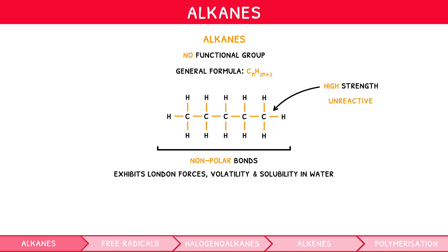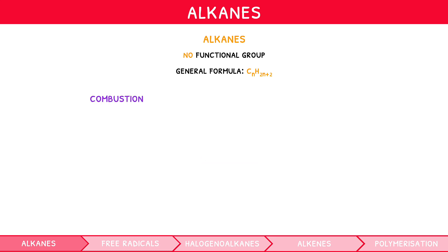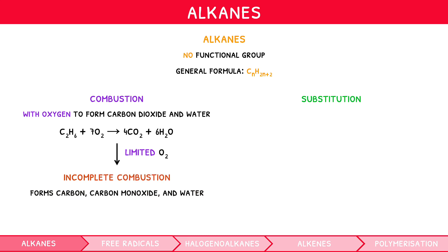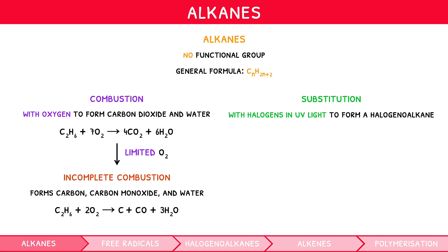However, the two reactions they undergo, which you must learn, are combustion and substitution. They undergo complete combustion with oxygen to form carbon dioxide and water — for example, the equation for ethane is this. It is worth noting that if oxygen is limited and incomplete combustion occurs, they form carbon, carbon monoxide and water — for example, this. This reaction produces a smoky flame. They also undergo substitution with halogens in the presence of UV light to form a halogeno alkane and hydrogen halide. For example, the equation for ethane reacting with chlorine is C2H6 + Cl2 → C2H5Cl + HCl.